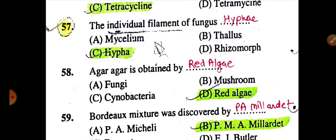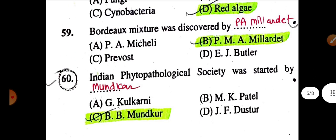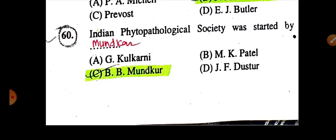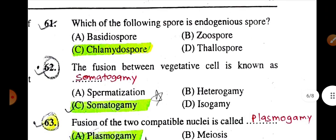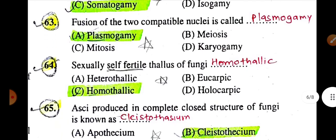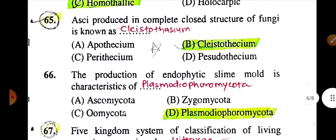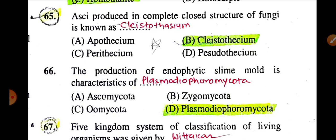Heart rot of coconut palm disease is caused by protozoan. Phytoplasma is sensitive to tetracycline antibiotic. The individual filament of fungus is called hypha. Agar-agar is obtained from red algae. Bordeaux mixture was discovered by P.A. Millardet. Indian Phytopathological Society was started by Mukherjee. Which of the following spore is an endogenous spore? Answer: Chlamydospore. The fusion between vegetative cells is known as somatogamy. Fusion of two compatible nuclei is called plasmogamy. A sexually self-fertile thallus of fungi is homothallic.